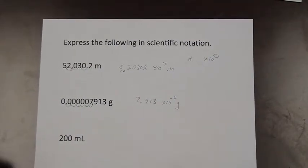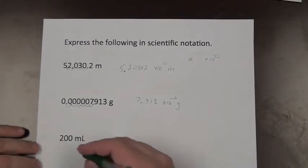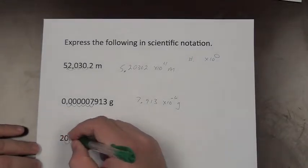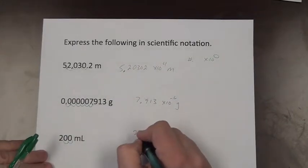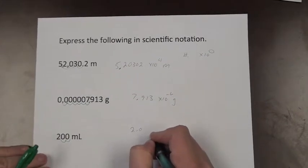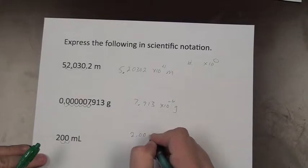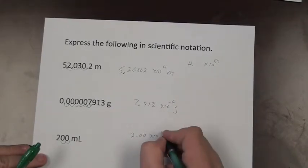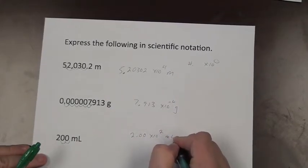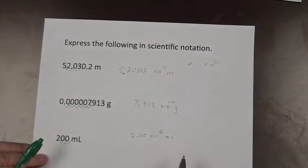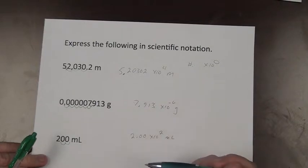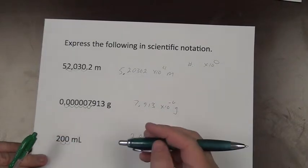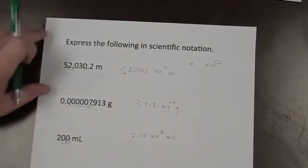For this last one, we move the decimal 1, 2 places, so this becomes 2.00 times 10 to the 2nd milliliters. In summary, if we move the decimal to the left it becomes a positive exponent; if we move it to the right it becomes a negative exponent.